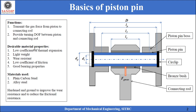The desirable properties of the material of the piston pin are that it should have a low coefficient of thermal expansion, in order to avoid any seizure with the small end of the connecting rod. It should have light weight — that is why most piston pins are hollow in shape. It should also have wear resistance, low coefficient of friction, and good bearing properties, as it continuously rubs against the surface of the small end of the connecting rod.